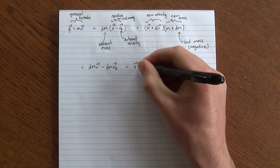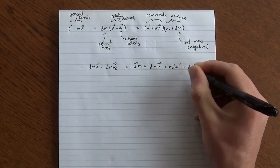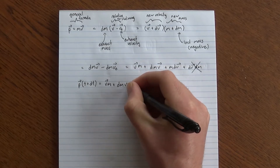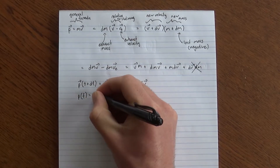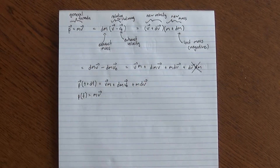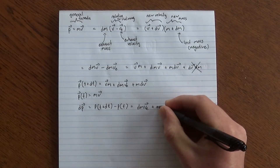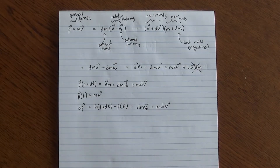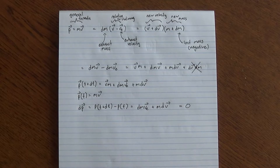Let's expand that bracket. Now, dv·dm is infinitesimally small, so we can discard it. Thus, the momentum of the rocket at t plus dt is mv plus m·dv plus dm·ve. Of course, the momentum at t is mv, so we can find the differential momentum as m·dv plus dm·ve. However, we already said there were no external forces acting upon the rocket, so we know that the momentum is constant. Therefore, dp is zero.